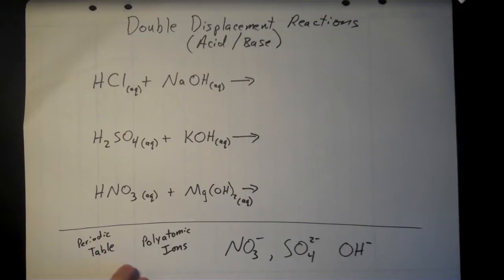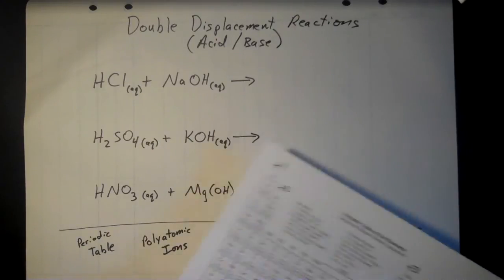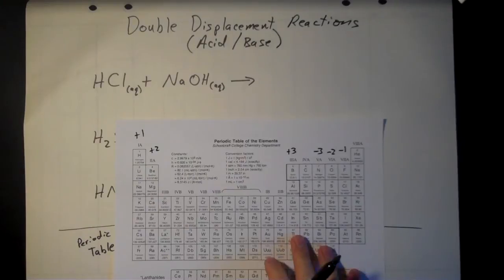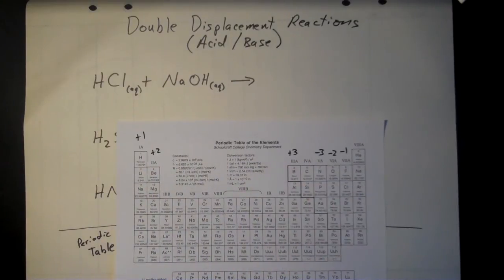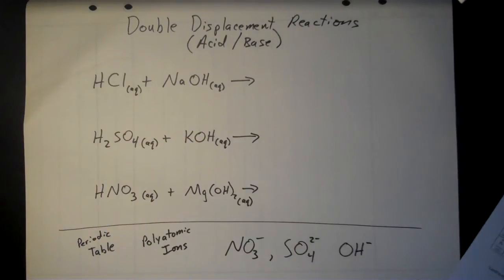You want to have your periodic table handy and a list of polyatomic ions. I've put the three different polyatomic ions that we're going to be dealing with down at the bottom here. The periodic table has all the charges we'll need for these particular examples.